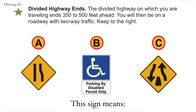Divided highway ends. The divided highway on which you are traveling ends 350 to 500 feet ahead. You will then be on a roadway with two-way traffic. Keep to the right. The correct answer is C. Divided highway ends.